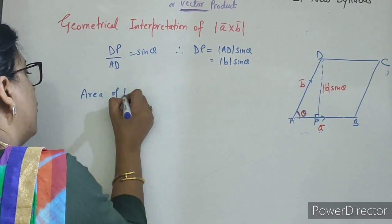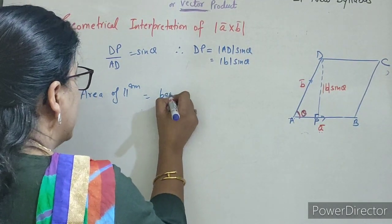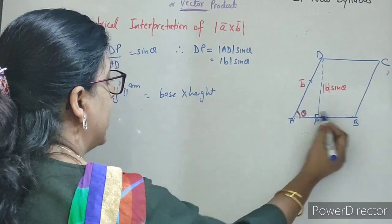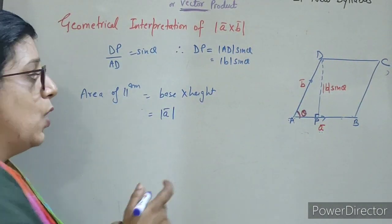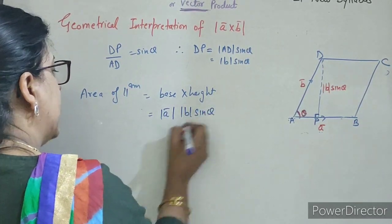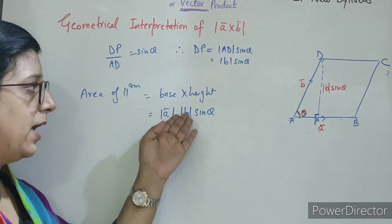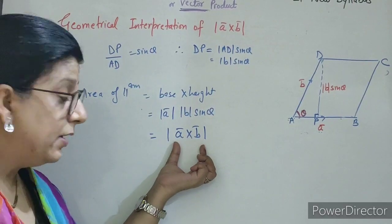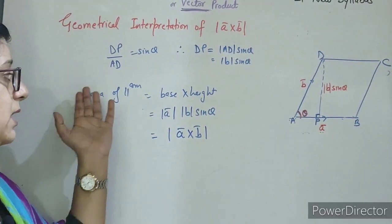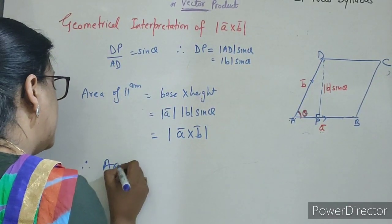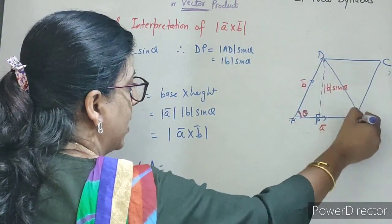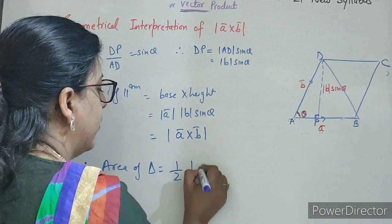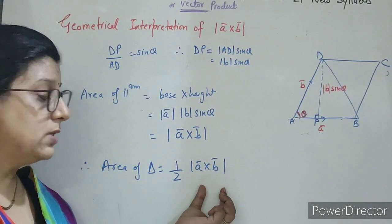Students, what is area of parallelogram? Base into height. What is base? AB, that is mod A. Aur height kitna hai? Mod B sin theta. What is mod A × mod B × sin theta? Yeh kya hai — magnitude of A cross B. It means joh magnitude hai A cross B ka, yeh kya represent karta hai? Area of parallelogram. So therefore, agar hume nikalna hai area of triangle jiski do adjacent sides di hain, to kya ho jayega? Half mod of A cross B.